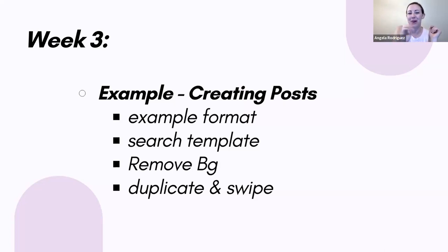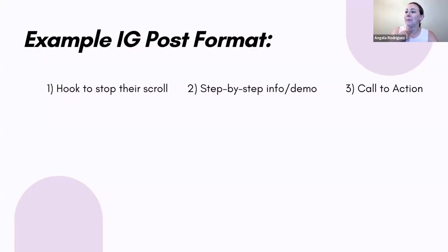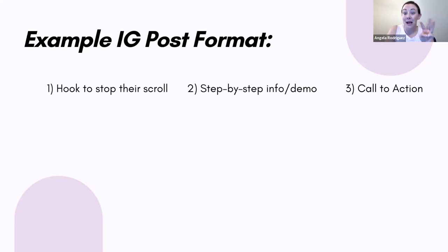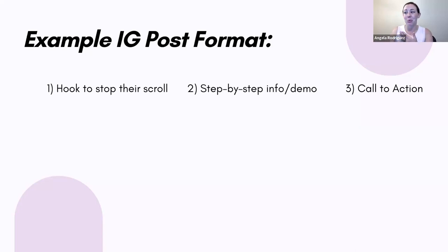We'll also show how to duplicate images in Canva and encourage people to swipe and spend more time on your posts — that's an Instagram thing specifically. When I'm making an Instagram post, I keep a few things in mind: I want it to be simple and appealing to the eye, I want something that stops the scroll and gets people interested, I don't want too much wording, I want to incorporate images as much as possible, and I like to have posts that people swipe.